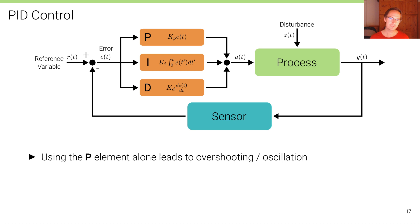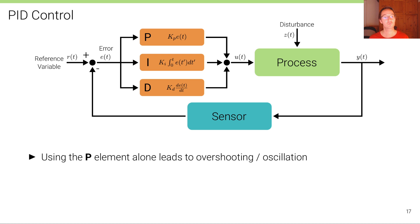Why do we need three elements? All of these three elements have a different purpose. The most important element is obviously the proportional element, which makes sure that we are actually controlling the process — that the error is minimized proportionally with the gain Kp. However, using the proportional element alone often does not work very well in practice, as it leads to overshooting and oscillation typically.